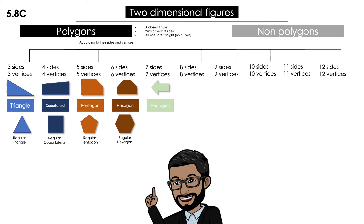If it has seven sides and vertices, like this arrow, it's a heptagon — with a P. Heptagon. That's the difference between the six and the seven: heptagon. If all the sides are congruent, that's going to be a regular heptagon.